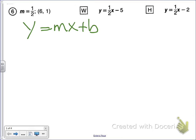Well, guess what? They give you a point, six one. So I'm going to plug in six and one for x and y. Here's what I'll get. One goes in for y, so one equals, m is the slope, so it's one-half times x, which is six, and then plus b.